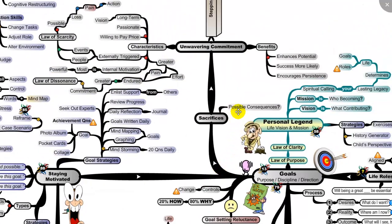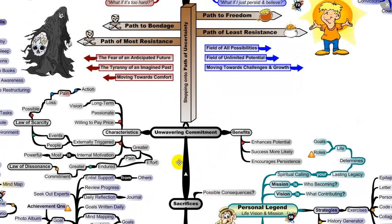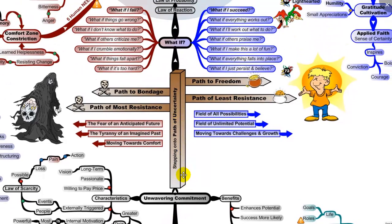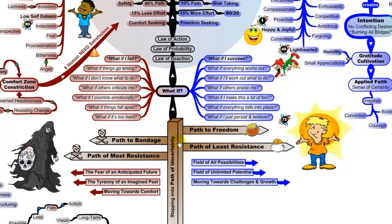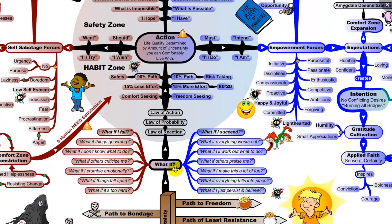We go through motivation techniques and back through goal-setting. In order to achieve anything in our lives we have to make certain sacrifices and then fully commit to whatever it is we want to achieve. As we come through here we go onto the path of uncertainty — we can go in two different directions: the path to bondage or path of most resistance, or the path of freedom, the path of least resistance.